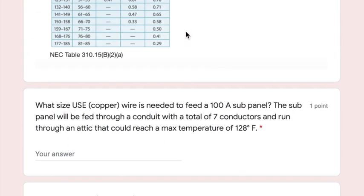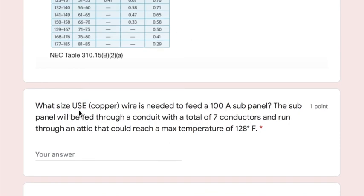In this case, because we're doing adjustment and correction, we have to take into account that we have more than three current carrying conductors, and we are also going to have an ambient temperature which is more than 30 degrees or 86 degrees Fahrenheit. Okay, so our first problem here says: what size U.S.E. copper wire is needed to feed a 100-amp subpanel? The subpanel will be fed through a conduit with a total of seven conductors and run through an attic that could reach a max temperature of 128 degrees Fahrenheit.